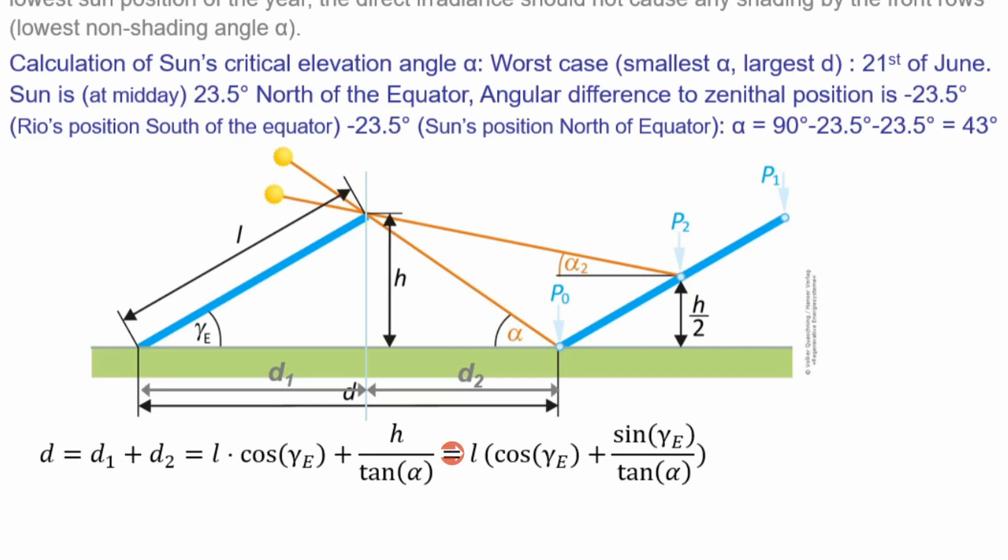We can simplify that. Then we have only L, and because we substitute h, then we have just cosine of γ_E plus sin of γ_E divided by tangent of alpha. Just put in the number.